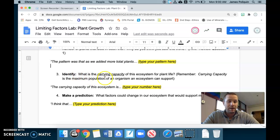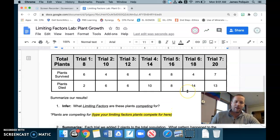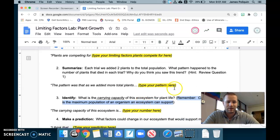Three. You're going to make a quick identification. What is the carrying capacity of this ecosystem for plant life? Remember the carrying capacity is the maximum population of an organism an ecosystem can support. So we have to go up into our data table and we have to figure out for our ecosystem for this plant life, how many plants can survive in our ecosystem? You can do the maximum number or you can take a rough estimate. And you'll type that number.